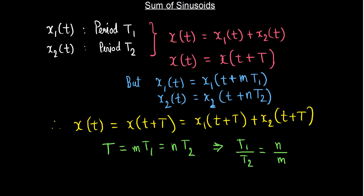This is a very important conclusion. If we have two periodic signals — x1(t) periodic with period T1 and x2(t) periodic with period T2 — their sum x(t) is also periodic if and only if the ratio of the individual periods T1/T2 is a rational number.